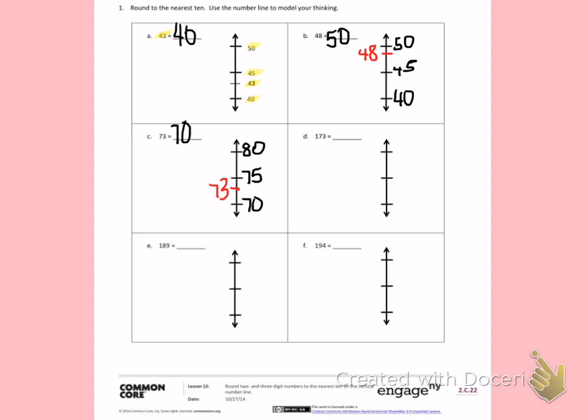Letter D. I have 173. Very similar to letter C. I think about the two 10s that 173 fits between. It fits between 170 and 180. The halfway number between 170 and 180 is 175. 173 would be about here on the number line. 173 has not yet reached the halfway number, so I am going to round down. 173 is about 170.